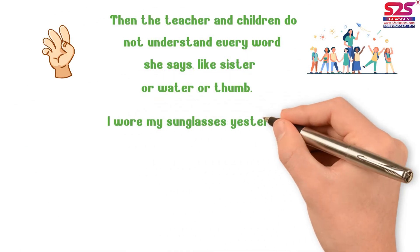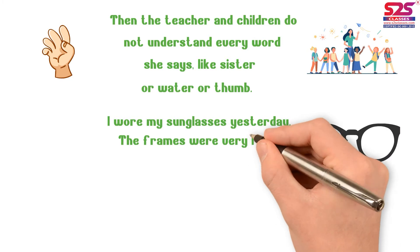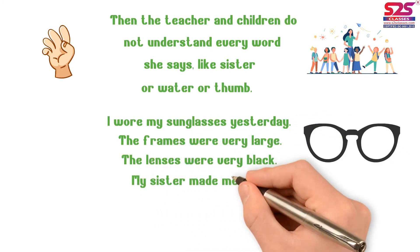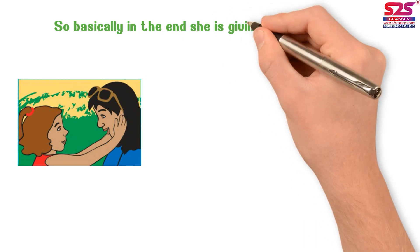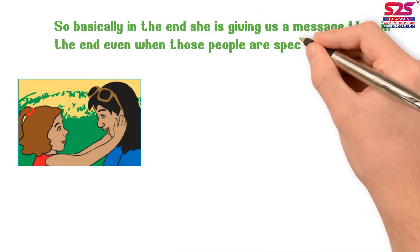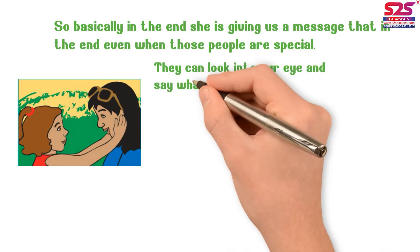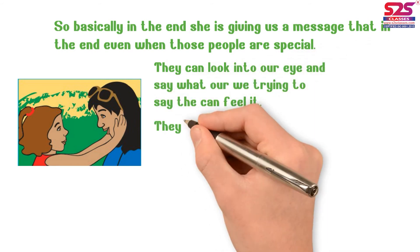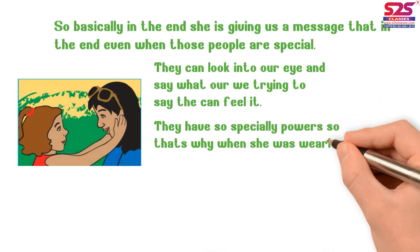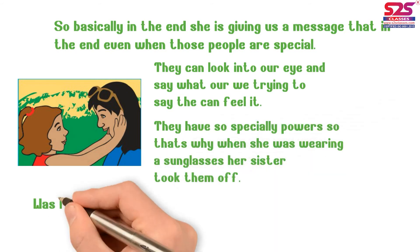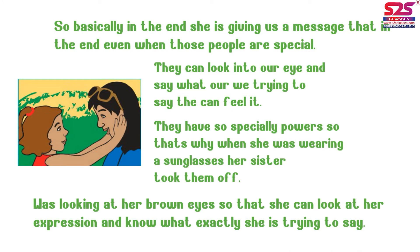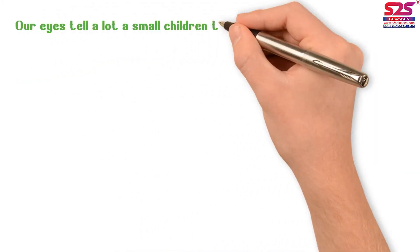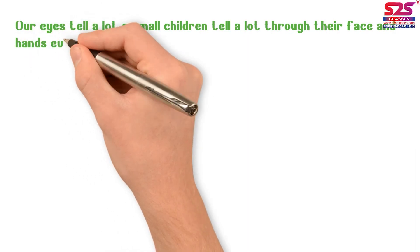The poem continues: 'I wore my sunglasses yesterday. The frames were very large, the lenses were very black. My sister made me take them off when I spoke. What do my brown eyes say to her brown eyes?' The message here is that even when people are special, they look into our eyes and can feel what we are trying to say. Her sister took the sunglasses off to look at her expressions and know exactly what she was trying to say. Our eyes and face tell a lot.